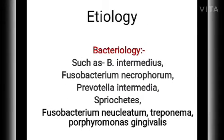The etiology of ANUG includes bacteriology. The bacteria responsible for ANUG include Prevotella intermedia (B. intermedius), Fusobacterium nucleatum, Treponema, and Porphyromonas gingivalis.